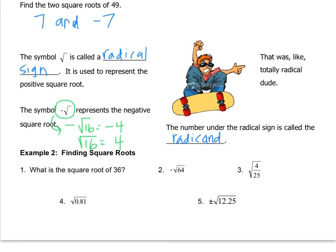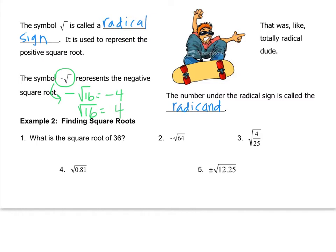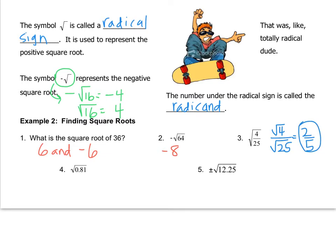In example 2, there are some new ones and some we've done before. Number 1: the square root of 36 — since it doesn't give us the symbol, we write both numbers, 6 and negative 6. Number 2 wants only the negative answer, so the square root of 64 is 8, and we write negative 8. Number 3 might look a little freaky, but you just split it up: do the square root of 4 over the square root of 25. Those are both perfect squares, so you get 2 over 5. For numbers 4 and 5, pause the video and get your calculator — it should have a square root symbol on it somewhere.